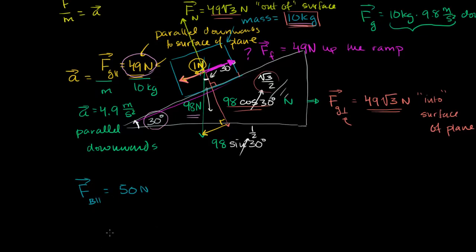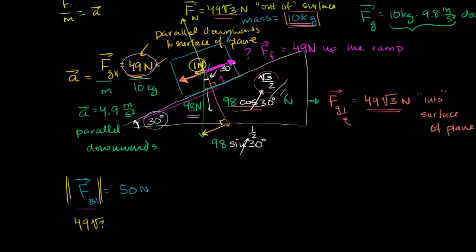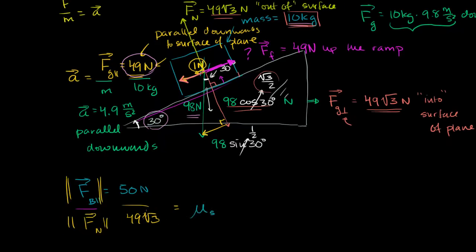An interesting ratio that tends to hold for given materials is the ratio between the budging force and the normal force — the force the two objects exert on each other. In this case, the normal force is 49 square roots of 3 newtons. So the ratio is 50 newtons over 49 square roots of 3 newtons. We call this the coefficient of static friction. Computing it: 50 divided by 49 times the square root of 3 gives approximately 0.72. This coefficient tends to hold true for different materials.